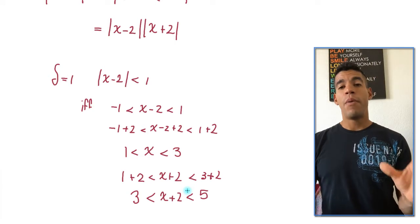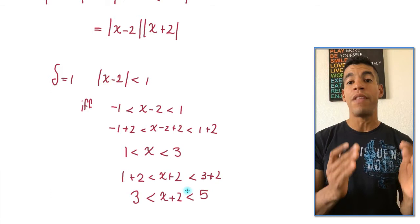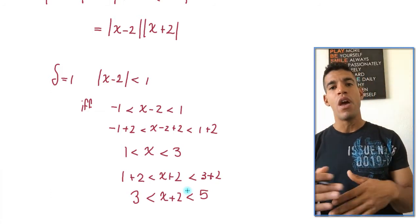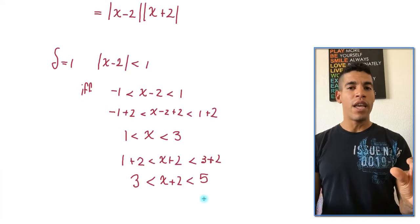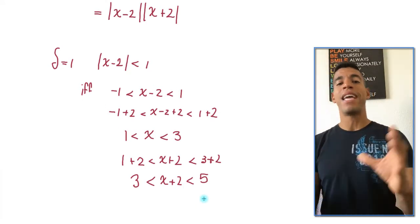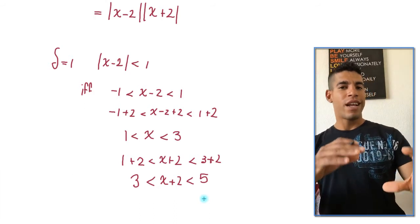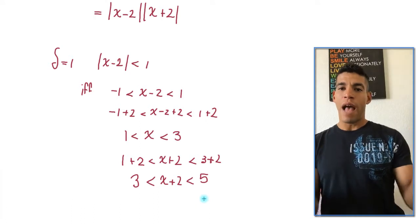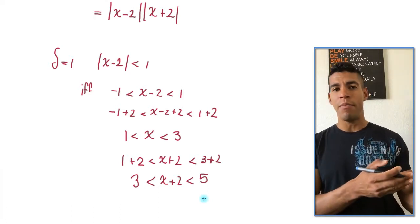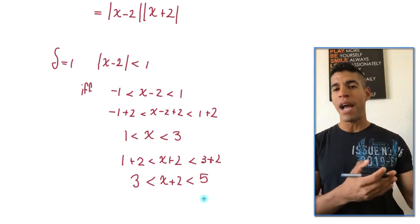But remember, we want to go back to absolute value. We're looking for the upper bound of the absolute value of x plus 2, not just x plus 2. So I have to rewrite this inequality in a way that I can use it as an absolute value. So just like a reverse method from the beginning, we need to have a minus 5, because we have greater than 5, but to convert it into absolute value, we need a minus 5.